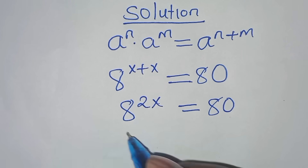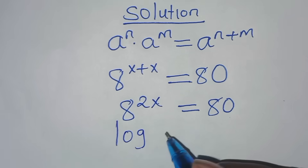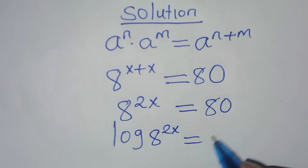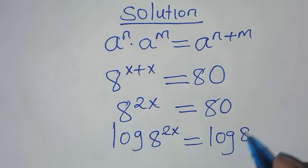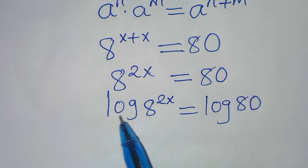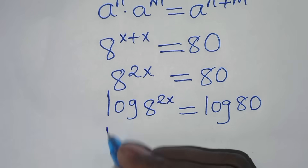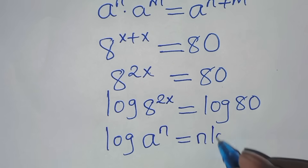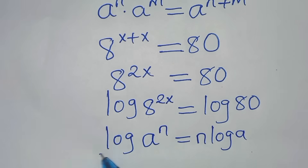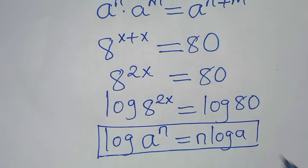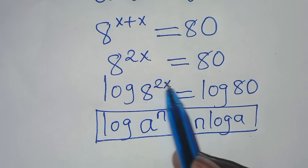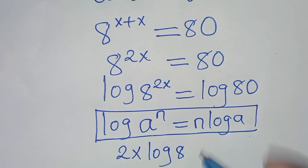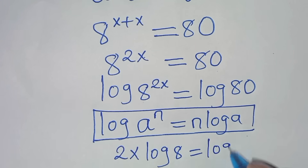To solve for x, we introduce logarithm on both sides. So we have log(8 to the power 2x), this is equal to log(80). Now, log(8 to the power 2x) is in the form of log(a to the power n), which we can express as n·log(a). Applying this power log property, log(8 to the power 2x) can be expressed as 2x·log(8). This is equal to log(80).